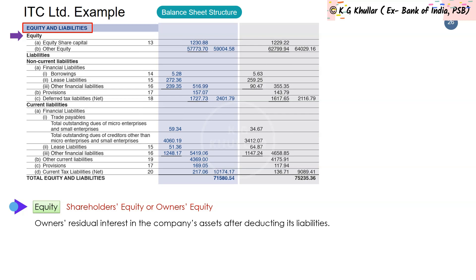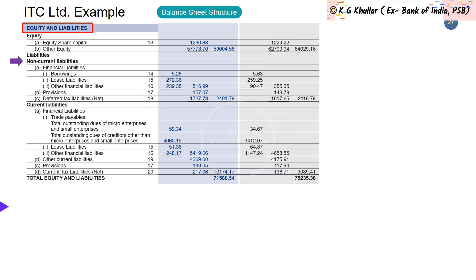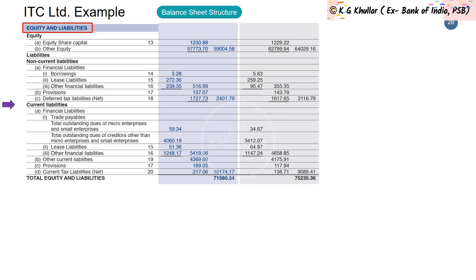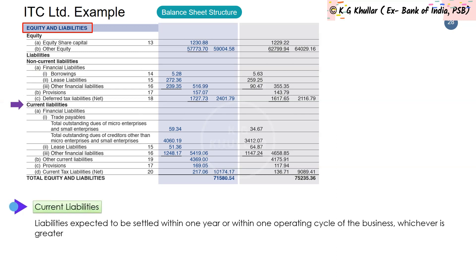Under liabilities, first we have non-current liabilities, which include long-term financial liabilities and deferred tax liabilities — financial liabilities, provisions, and deferred tax liabilities are all long-term in nature. Then we have current liabilities — liabilities expected to be settled within one year or within one operating cycle of a business, whichever is greater after the reporting period.